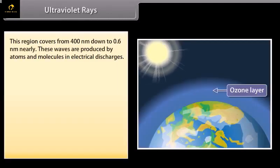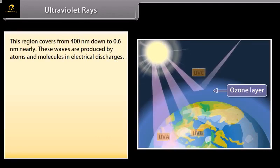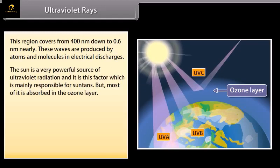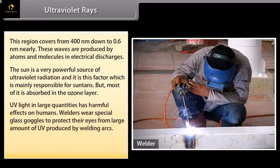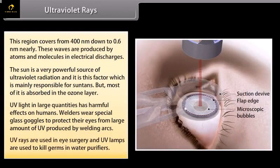Ultraviolet rays. This region covers from 400 nm down to 0.6 nm nearly. These waves are produced by atoms and molecules in electrical discharges. The sun is a powerful source of ultraviolet radiation and it is this factor which is mainly responsible for sun tans but most of it absorbed in the ozone layer. UV light in large quantities has harmful effects on humans. Welders wear special glasses or goggles to protect their eyes from large amounts of UV produced by welding arcs. UV rays are used in eye surgery and UV lamps are used to kill germs in water purifiers.